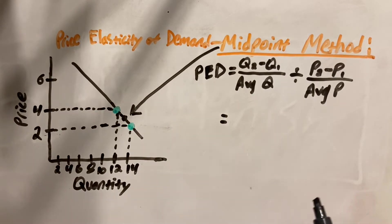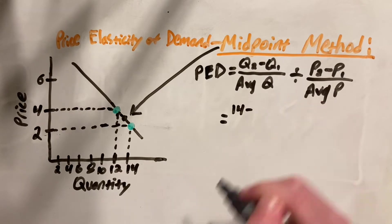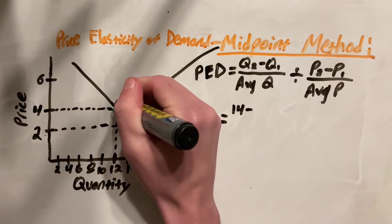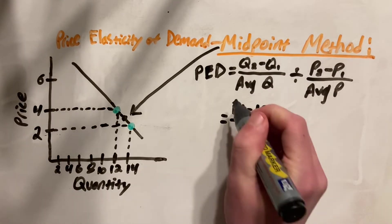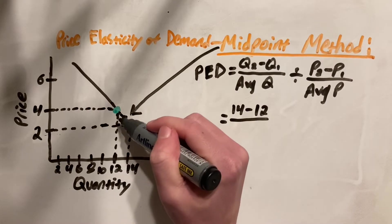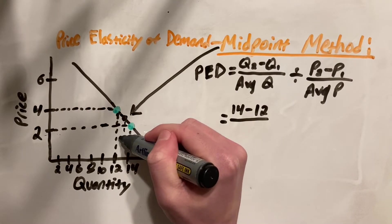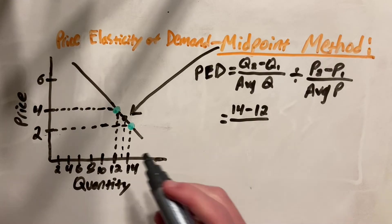We have Q2 first. Quantity at Q2 is 14, so we have 14 minus Q1, which is 12. And that's all over the average of Q. The average will be right in between the two Qs, so in between 12 and 14, which will be 13.